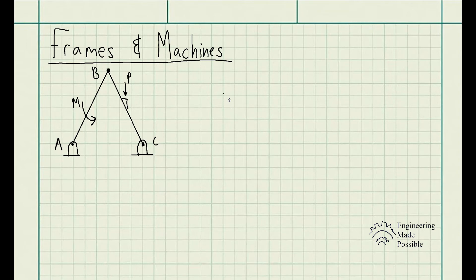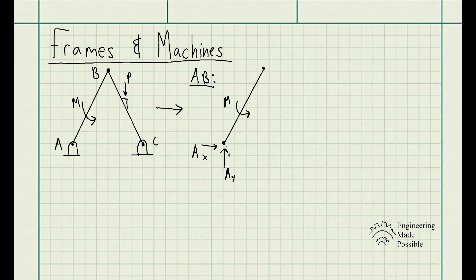Keep in mind: when a structure is in static equilibrium, each member is also in static equilibrium, and we can use that to solve for unknown reactions. Looking at member AB, since it's a hinge, we have force components in the X and Y directions. We also have an external moment being applied, and at pin B — since it's a pin — we'll also have force components in X and Y.